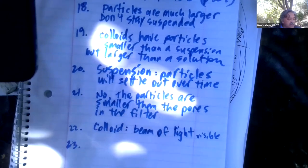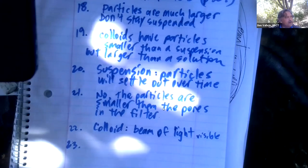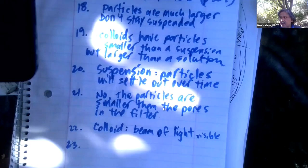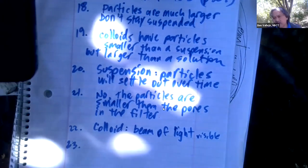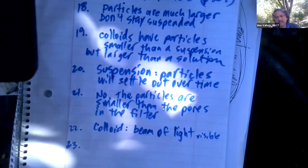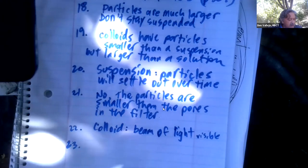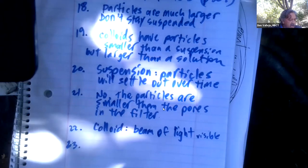The last one: can the presence of Brownian motion distinguish between a solution and a colloid? Brownian motion is when particles — whether molecules or atoms — are moving around randomly. You increase Brownian motion if you heat up a system, and you can cool it down to decrease it. Brownian motion has to do with collisions: if there's more heat and particles are moving faster, there's a higher percentage chance they'll collide with each other.